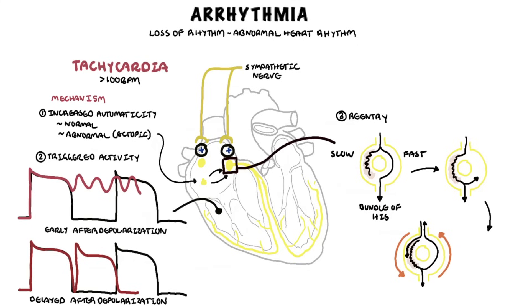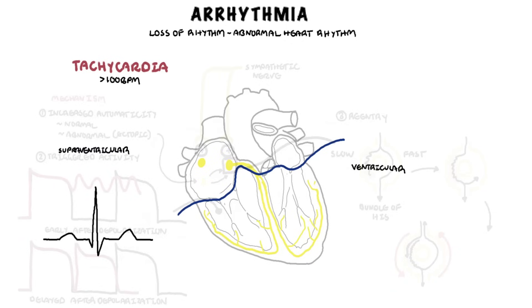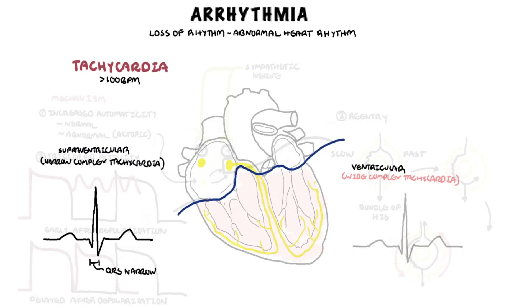The example involving the atrioventricular node is the cause of the classic supraventricular tachycardia. Another useful way to classify tachyarrhythmias is based on location: supraventricular or ventricular arrhythmias. Supraventricular arrhythmias originate from the atrium and AV node above the ventricles, and are characterized by normal-appearing or narrow QRS complexes. Ventricular arrhythmias originate below the atrioventricular node at the ventricular level, and are characterized by abnormal-appearing, prolonged QRS complexes.